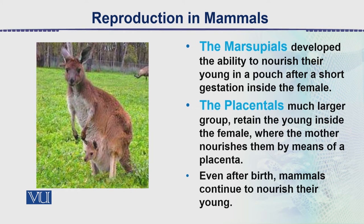The next group is the placentals — a much larger group. They retain the young inside the female where the mother nourishes them by means of a placenta. Very early in gestation, in the embryonic condition, a contact with the mother develops via what we call the placenta. These are the animals we call the placental mammals.